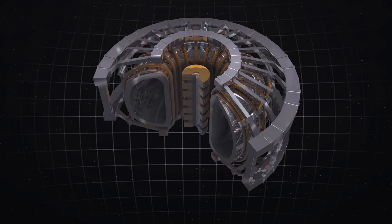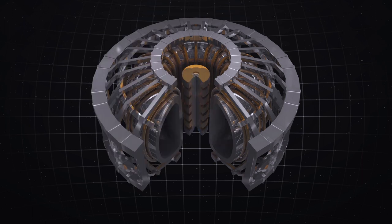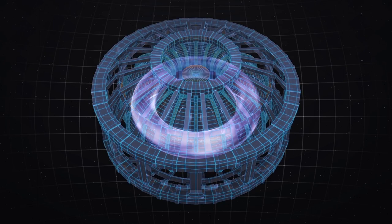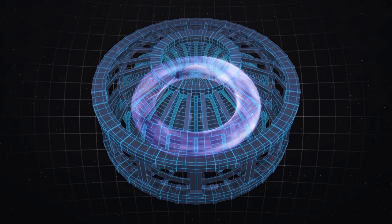As the plasma would vaporize the giant metallic machine if it escaped, an outer set of magnetic coils also shapes and positions the swirling superheated plasma.